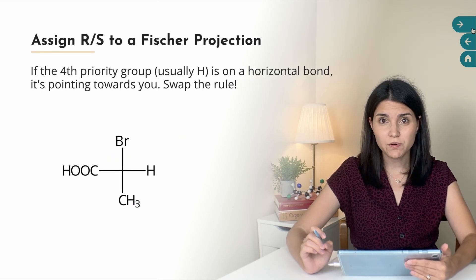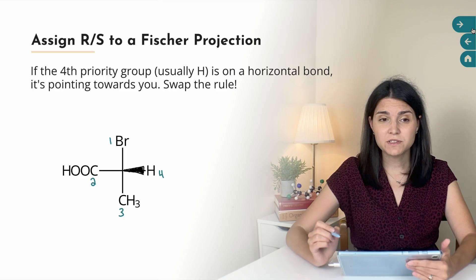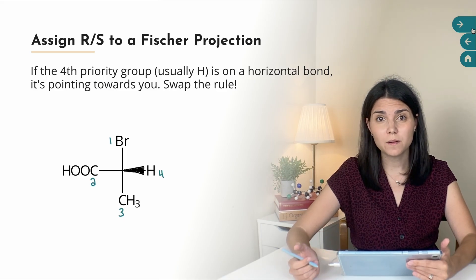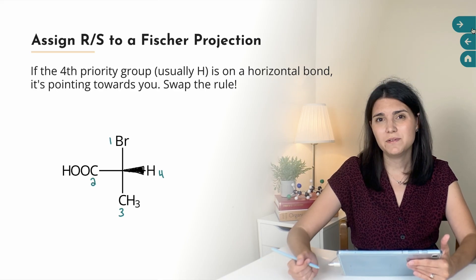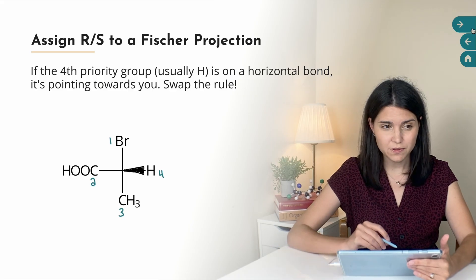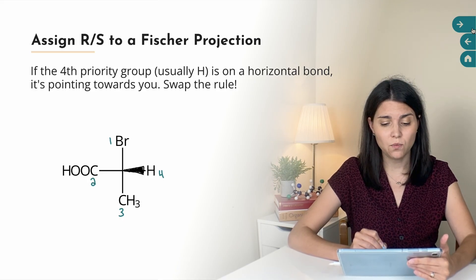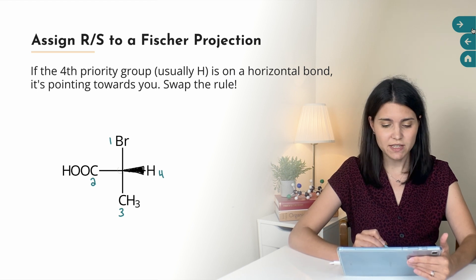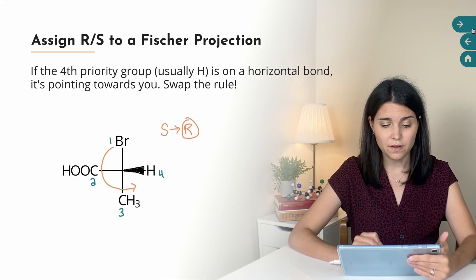If the fourth priority group is on a horizontal bond, that means it's pointing towards you, so you have to remember to swap the rule. If your one-two-three circle is clockwise, you would normally get R, but you need to switch it to S. If your circle is counterclockwise, you'd normally get S, but you need to switch it to R. For this example, the first priority is bromine, the carboxylic acid (COOH) has second priority, and the methyl group is third, with the fourth priority hydrogen on a wedge pointing toward us. Tracing the circle gives counterclockwise, which is normally S, but we switch it to R because the hydrogen was pointing toward us. So this chirality center has an R configuration.